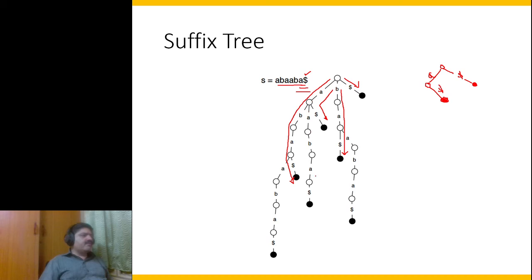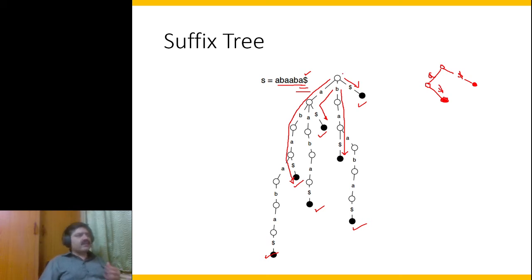Then we have 'aaba$' and then 'ababa$', which is the entire string followed by dollar. We start with a, b, then continue along the path. Note that we have simply drawn all the suffixes as a tree — that is what a suffix tree is. In simple words: take all suffixes and put them as a tree.